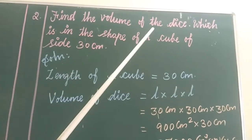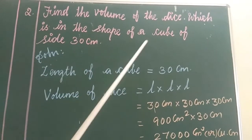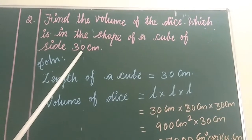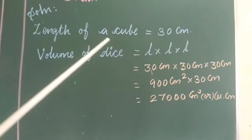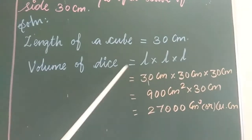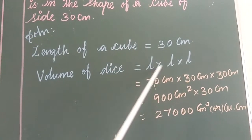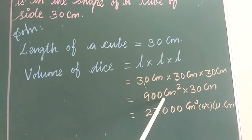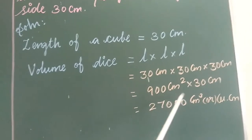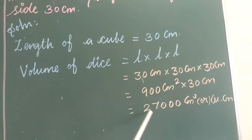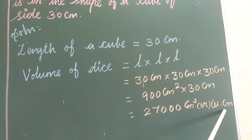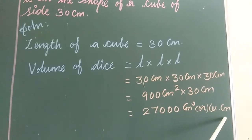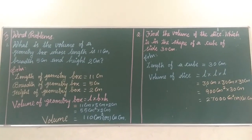The second one — find the volume of the dice which is in the shape of a cube of side 30 cm. Volume of cube = L × L × L = 30 × 30 × 30 = 27,000 centimeter cube or cubic centimeter. So, the volume of the dice is 27,000 cubic centimeters. Dear students, write these sums in your fair note with neat handwriting. Thank you.